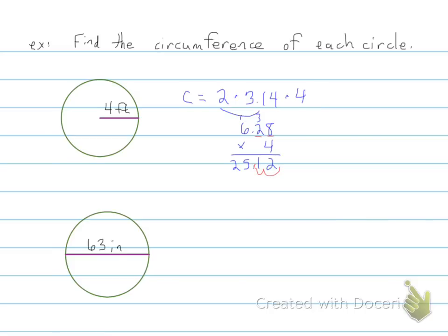Don't forget we have 1, 2 decimal places. So the circumference for this is 25.12, and again just like with perimeter of other shapes we need to include that unit of measurement.